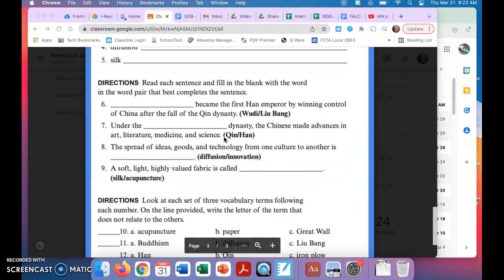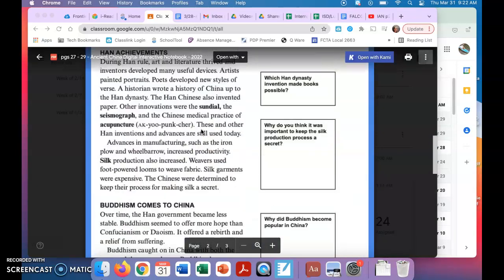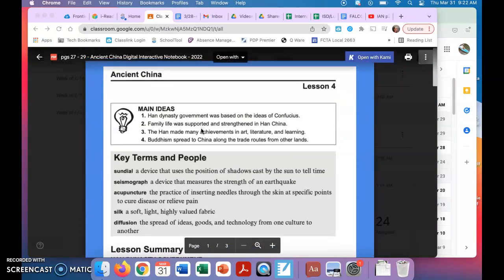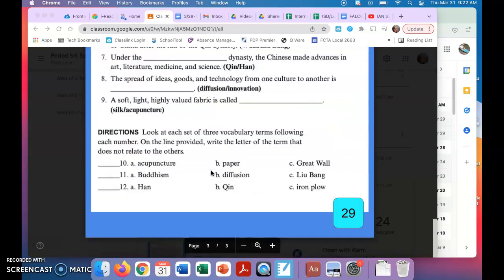And then number nine: a soft, light, highly valued fabric is called what? Is that silk or acupuncture? Again, you can go back into the reading and find the words or use the key terms and people box.